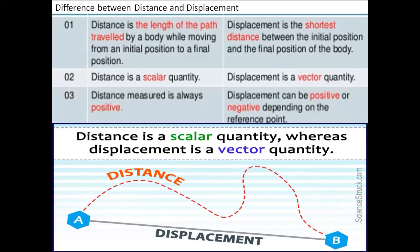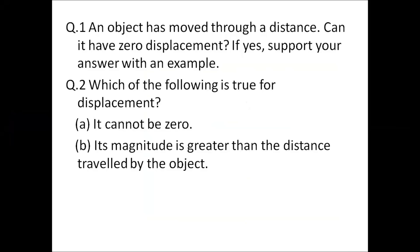Second: distance is a scalar quantity — scalar quantities are those which have magnitude only and no direction, so we do not need to mention any direction when talking about distance. Whereas displacement is a vector quantity — vector quantities have both magnitude as well as direction, meaning we need to specify direction. Also, distance measured is always positive; it can never be negative, whereas displacement can be negative or positive depending on the reference point.